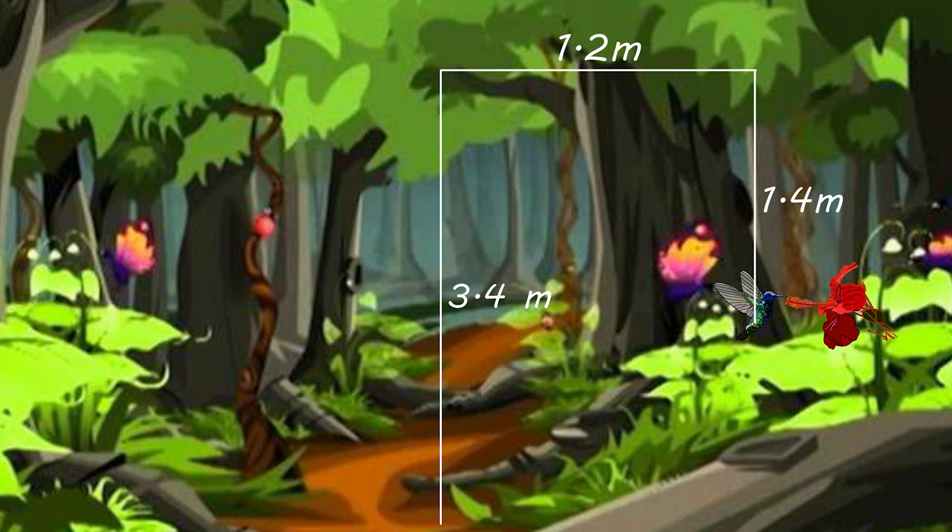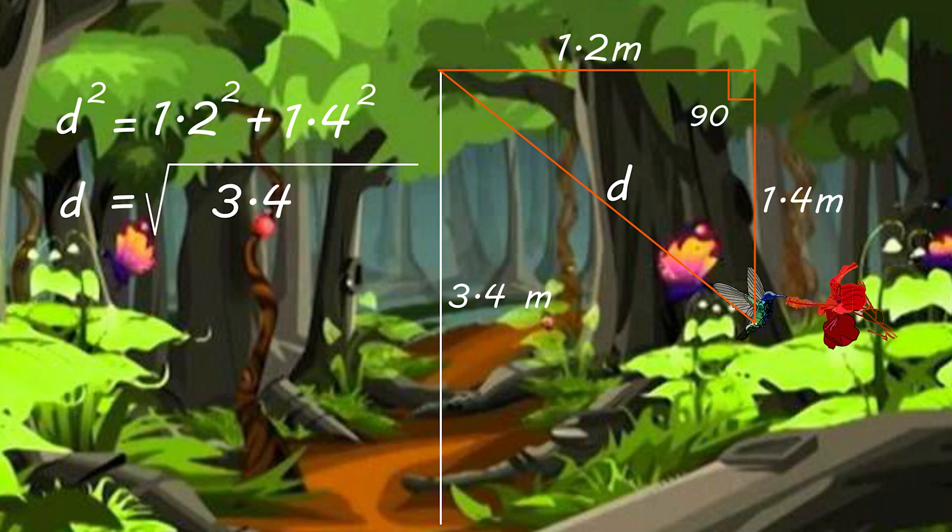The answer: The hummingbird displacement from the first position to the last position. As we can see, the displacement with the two movements form a triangle with the right angle. The displacement can be found using the Pythagorean theorem. The displacement d square equals 1.2 square plus 1.4 square. So d equals the square root for 3.4. Therefore, d equals 1.8 meters.